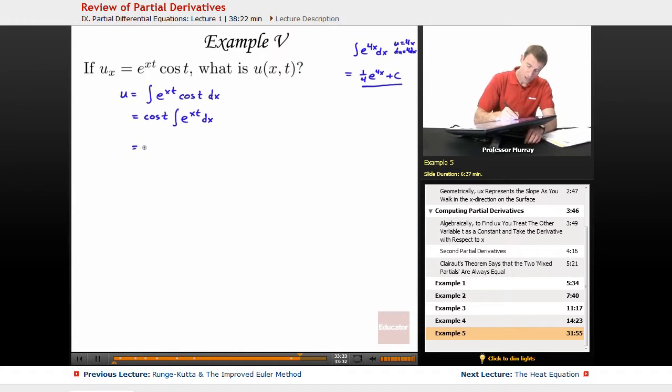And then doing that little substitution ends up with 1 fourth e to the 4x. So here, we've got cosine of t. Now, you want to think about this as e to the tx, where t is a constant, so it's kind of behaving like the 4 here. So instead of 1 fourth e to the 4x, I get 1 over t times e to the tx. It's just like the 4 was before, now we have this t.